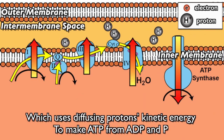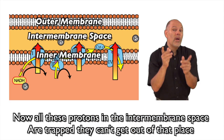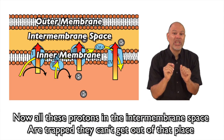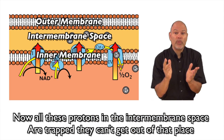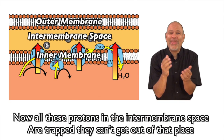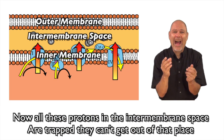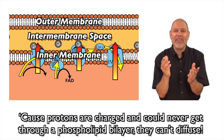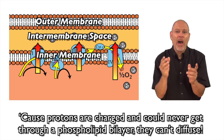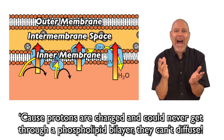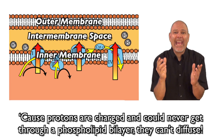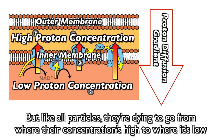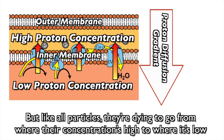Now all these protons in the intermembrane space are trapped — they can't get out of that place. Protons are charged and could never get through a phospholipid bilayer; they can't diffuse. But like all particles, they're driven to go from where their concentration's high to where it's low.